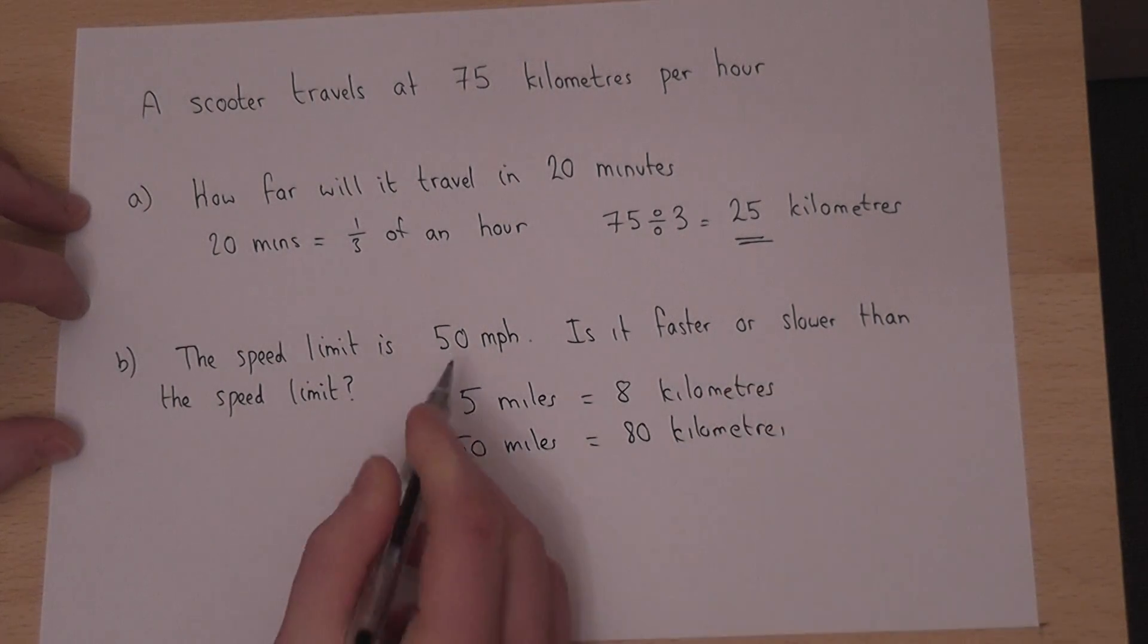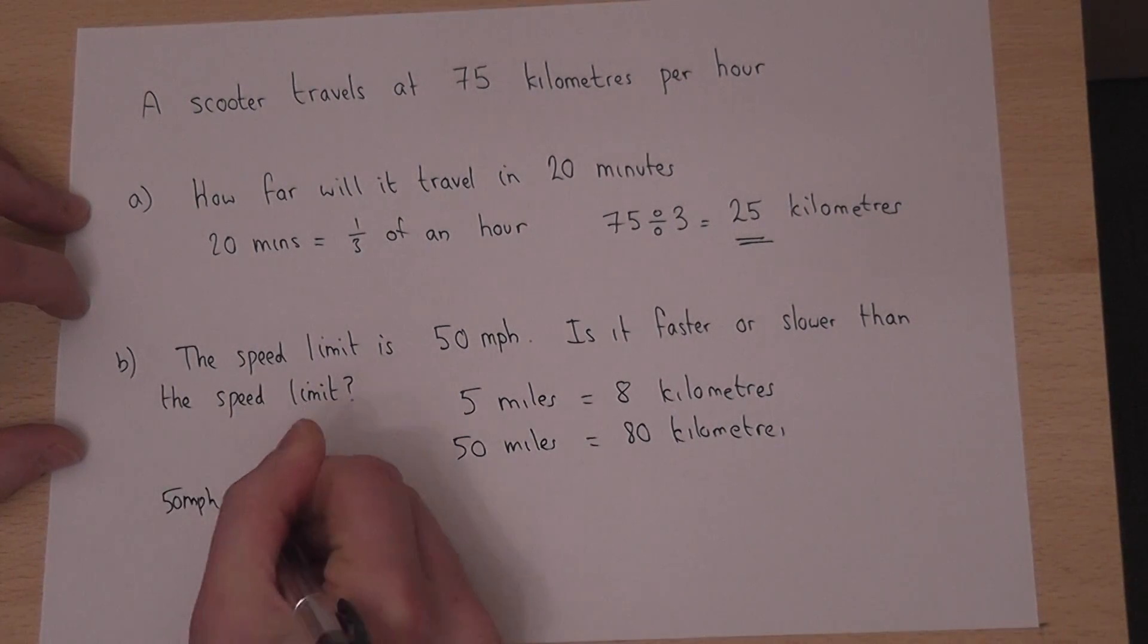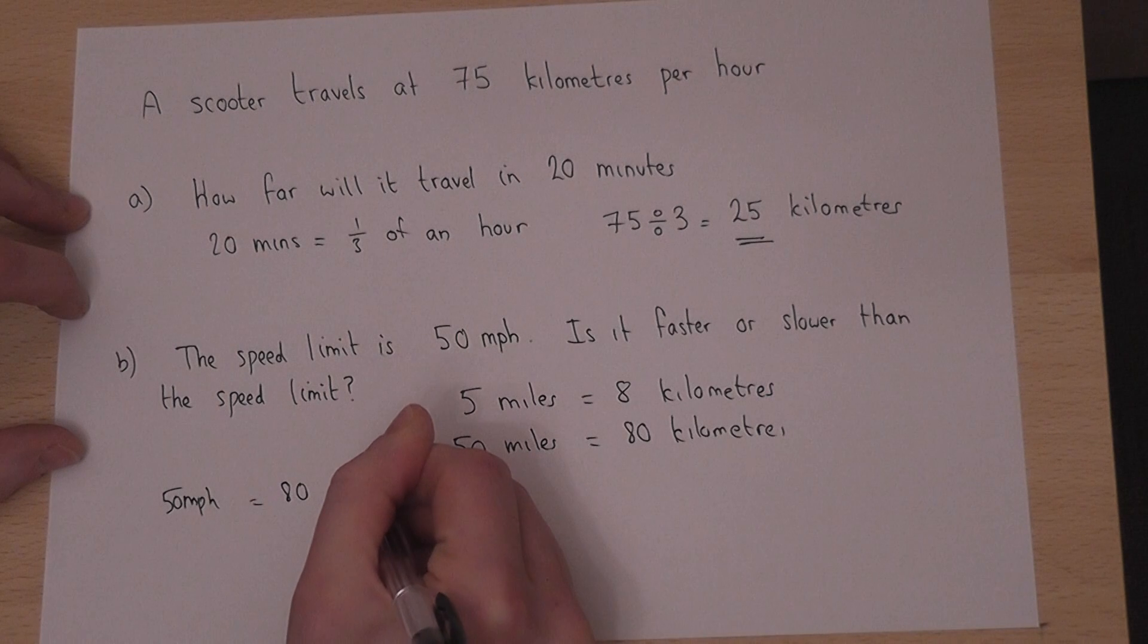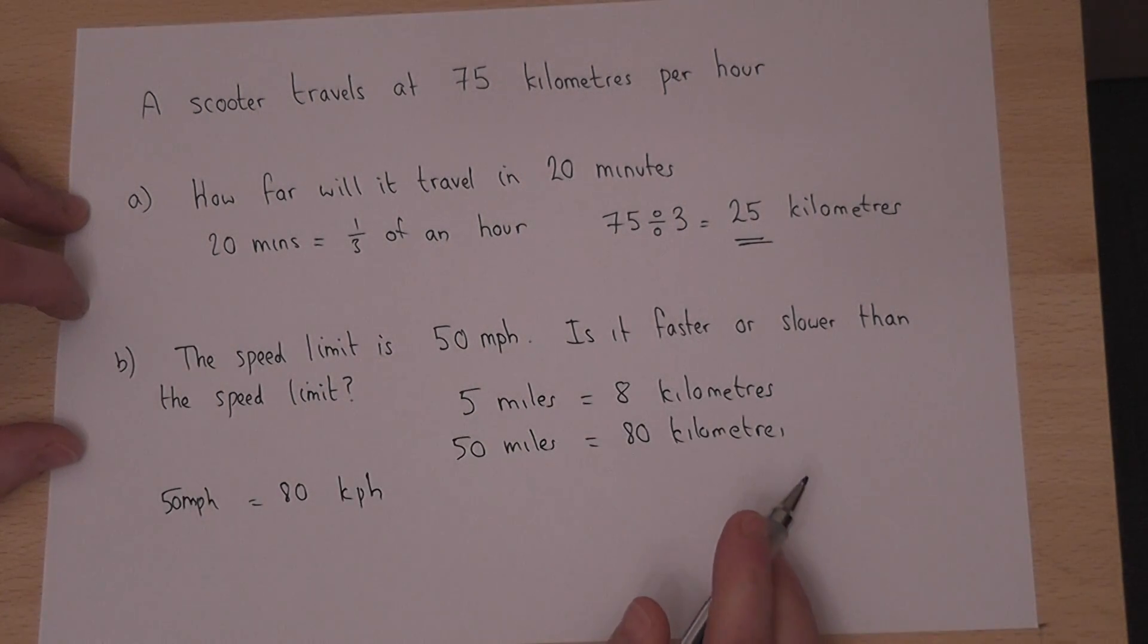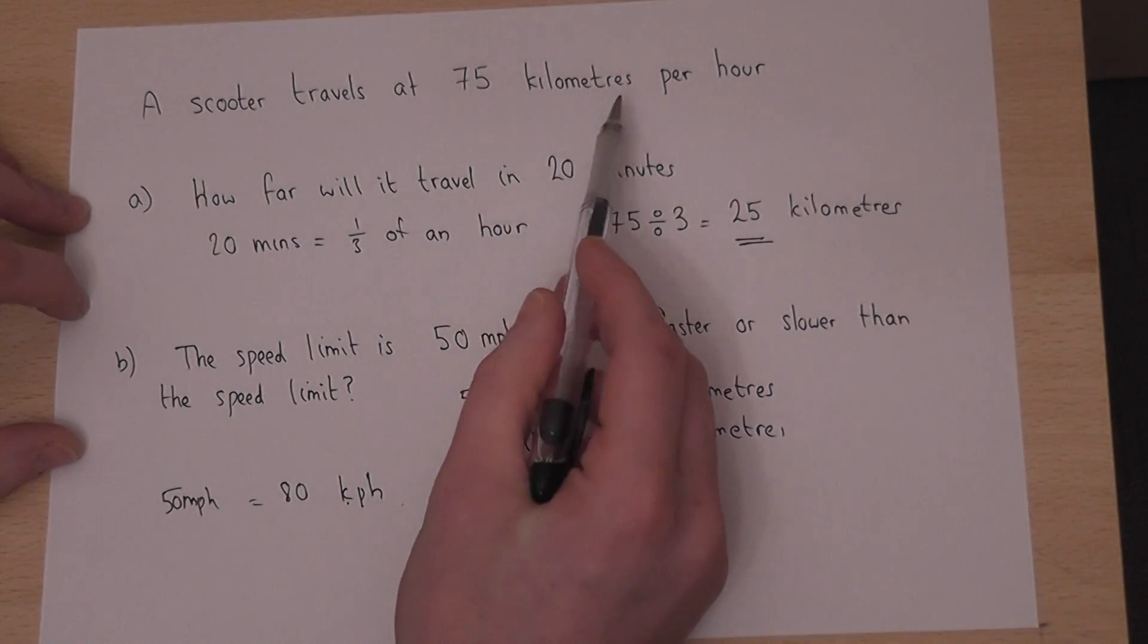So 50 miles an hour is the same as 80 kilometers per hour. If the speed limit is 80 kilometers per hour and the scooter is travelling at 75 kilometers per hour, then clearly it is travelling below the speed limit.